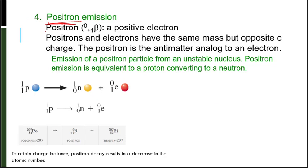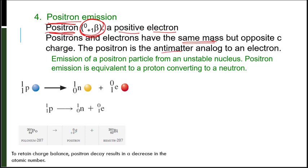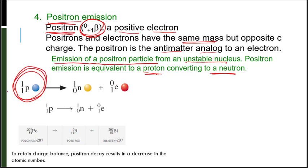We then have positron emission. A positron is a positive electron. Positrons and electrons have the same mass but opposite charge — the positron is the antimatter analog to an electron. This shows the emission of a positron particle from an unstable nucleus. Positron emission is equivalent to a proton converting to a neutron. A proton has a positive one charge and a mass of one. It converts to a neutron because my atomic number of one still needs to be the same on the right side. So if I have a neutron that's zero, then I need a one over here — a mass of one.